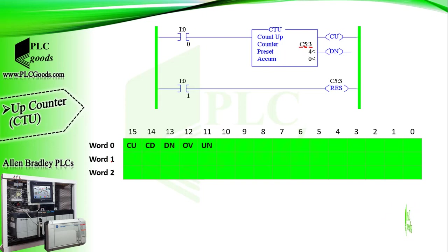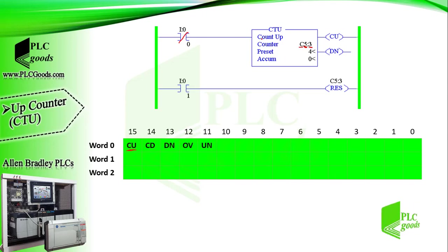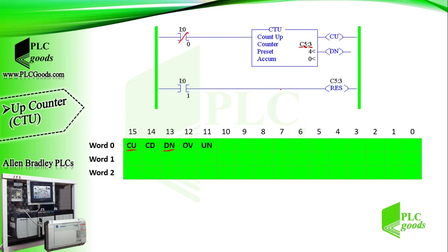Each counter element consists of three words. According to the program, the counting up bit, CU, will be on if the first input is activated. The next bit, CD, is used for down counters. The done bit, DN, is set to 1 and stays on when the accumulated value is equal or greater than the preset value.